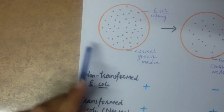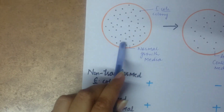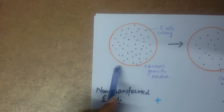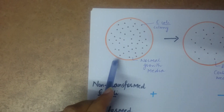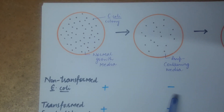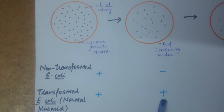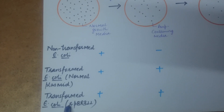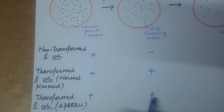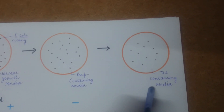On a petri plate with normal growth media, all non-transformed and transformed E. coli colonies are able to grow, since the media contains neither ampicillin nor tetracycline. When these colonies are transferred to a petri plate containing ampicillin, non-transformed E. coli are unable to grow because they lack pBR322. Transformed E. coli with normal pBR322 can grow due to an intact ampicillin resistance gene, and transformed E. coli with recombinant pBR322 can also grow because their ampicillin resistance gene is still intact.